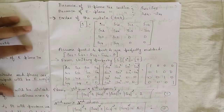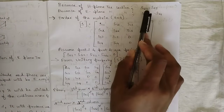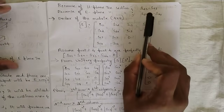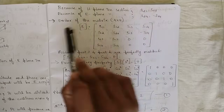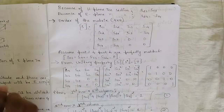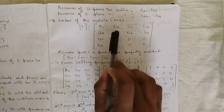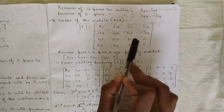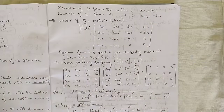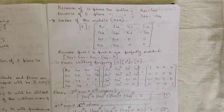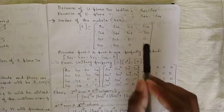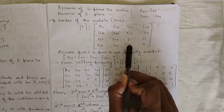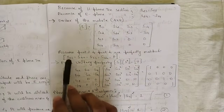Now let us find the scattering matrix values. Because of the H-plane T section, s23 equals s13. Because of the E-plane T section, s24 equals minus s14. The order of the matrix is 4×4 since it is a 4-port network. s33 and s44 are equal to 0 because both ports 3 and 4 are considered matched. Also, s34 equals s43 equals 0 from the characteristics.